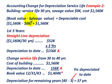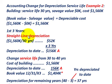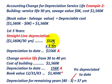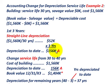Starting out to determine our depreciable cost — we take book value minus salvage value. With no salvage value, our depreciable cost is $1,560,000. For the first three years using straight-line with an estimated 30-year life, we divide $1,560,000 by 30, giving us $52,000 per year. So our depreciation to date before the change is three years times $52,000, which equals $156,000.